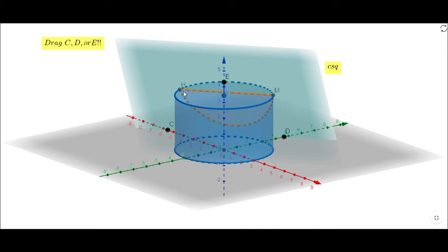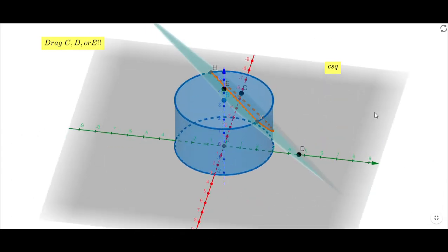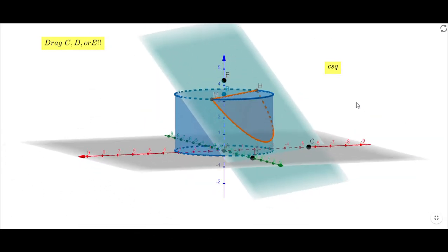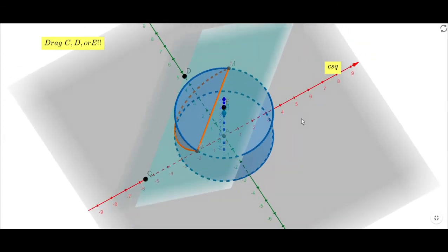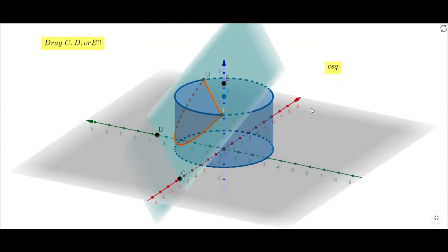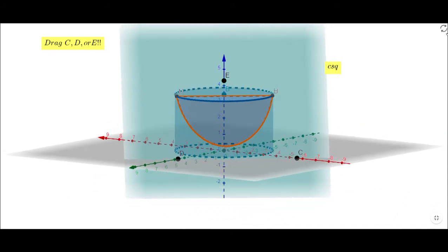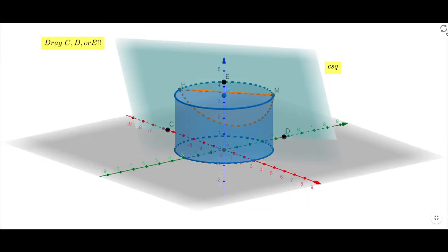Notice we can rotate. You can rotate this and see a better picture, better view. If you want to go back to the original one, just click on this curved arrow on the right. And also you can drag these three points—C, D, and E—to get different cross sections.